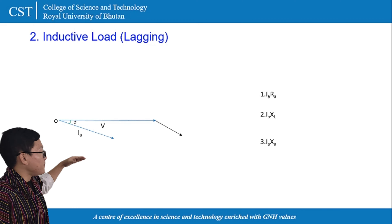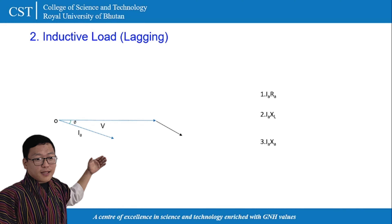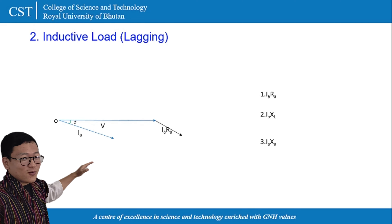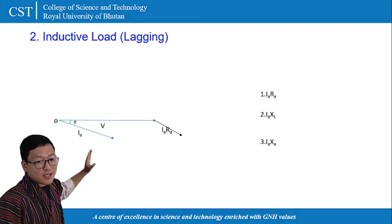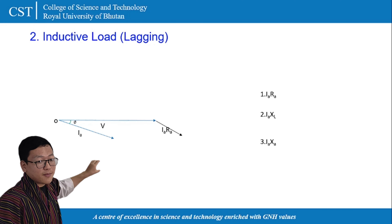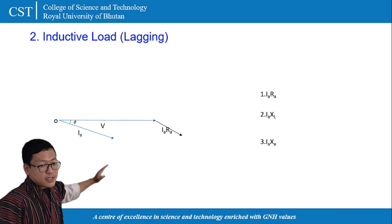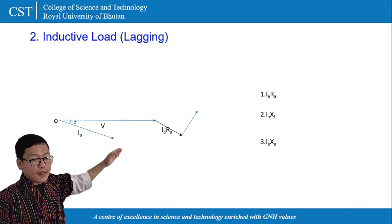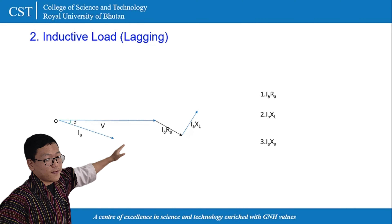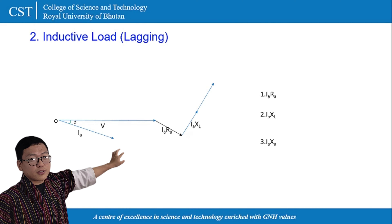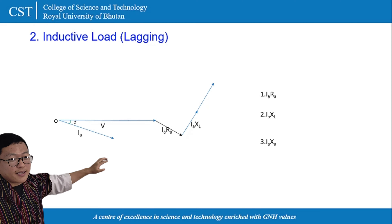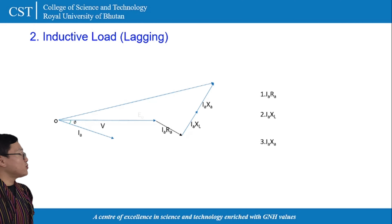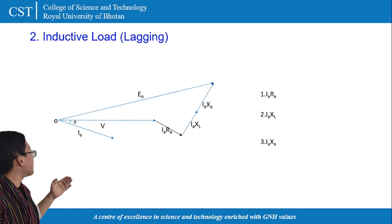Similar to what we have done in the resistive load example, we draw the tangent line from the terminal voltage through the different drops, which will be represented by the synchronous impedance and leakage impedance losses.